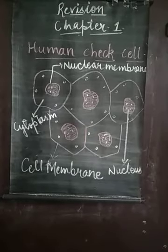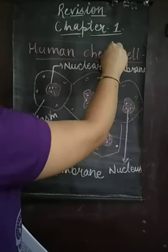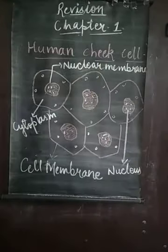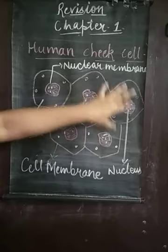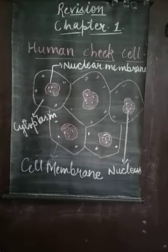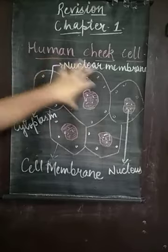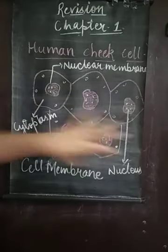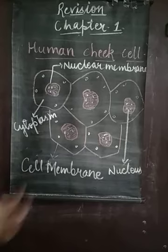Now here is a diagram of a human cheek cell — that is the human cheek cell. There is a correction in your book: this is the human cheek cell, which is the basic structure of a cell. You can see different cells here; this is one cell and this is another. The whole human body is made up of millions of cells, and all these individual cells are connected together to form our human body.